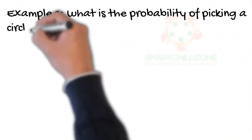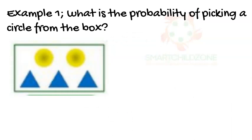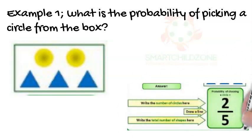Example 1, what is the probability of picking a circle from the box? Answer. First you write the number of circles, which is 2. Then you draw a line. Then you write the total number of shapes below it, which is 5. So the answer is 2 over 5.